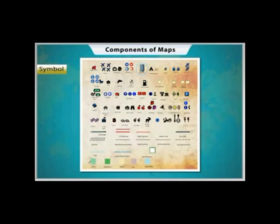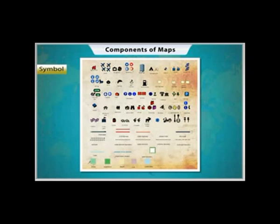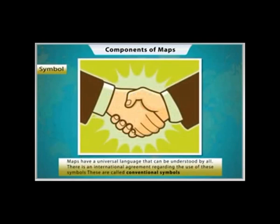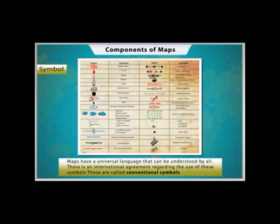Objects like buildings, roads, petrol pumps, and more are shown on maps by using symbols such as letters, objects, or colors. These symbols give a lot of information in a limited space. With the use of these symbols, maps can be drawn easily and are simple to read. Maps have a universal language that can be understood by all. There is an international agreement regarding the use of these symbols — they are called conventional symbols.